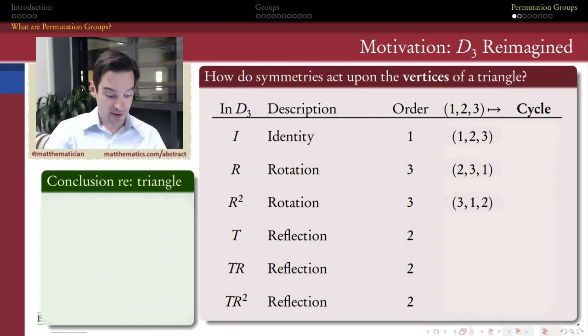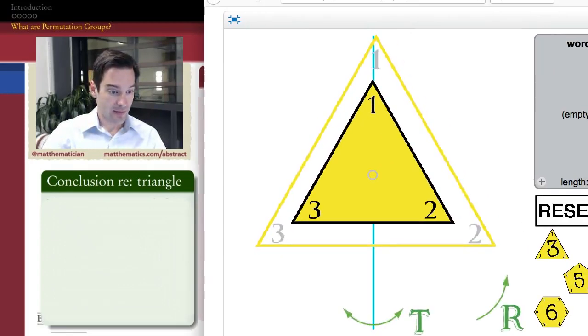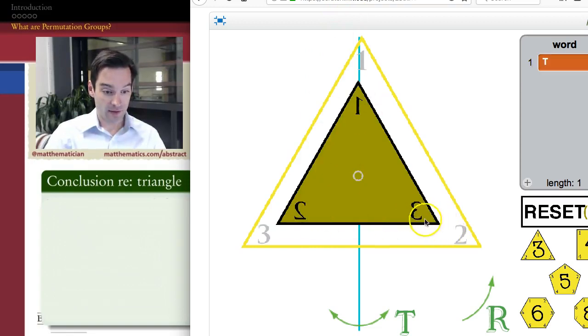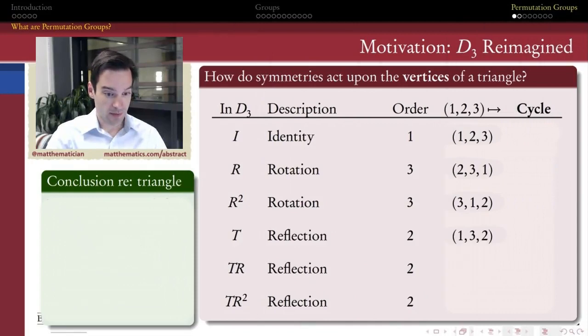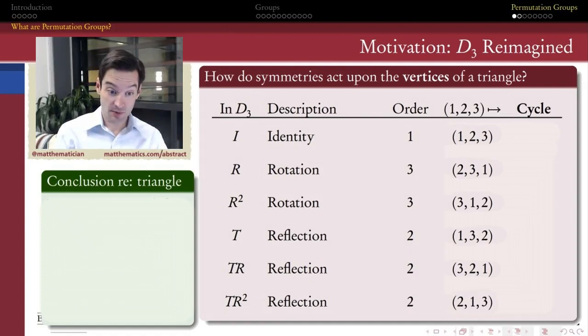And then looking at reflections, so the reflection of this triangle about its vertical axis of symmetry is going to flip-flop the vertices two and three. So then the other reflections, I can do similarly. So this is one way of notating a permutation. Each one of the symmetries of this equilateral triangle is going to effect a permutation of the vertices of that triangle.